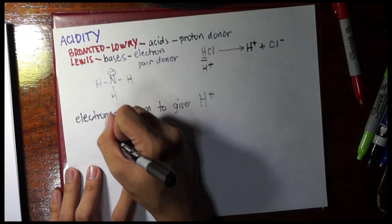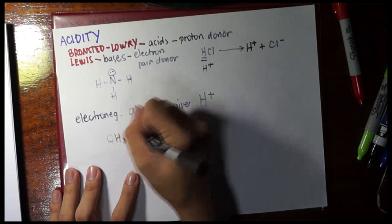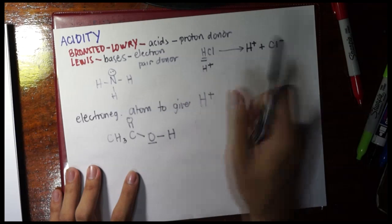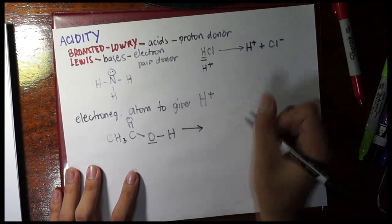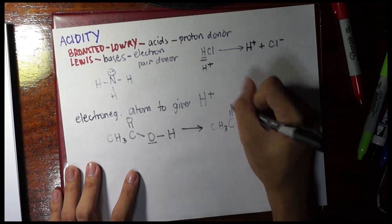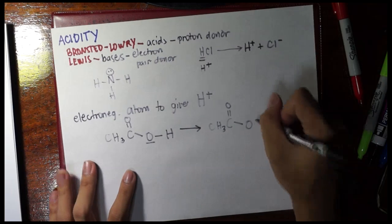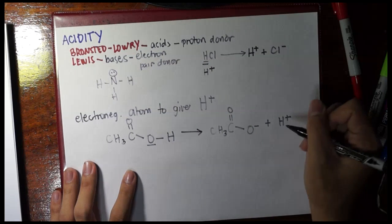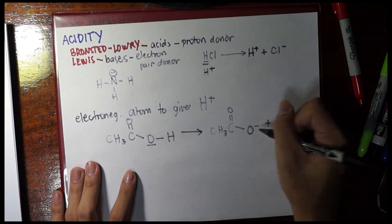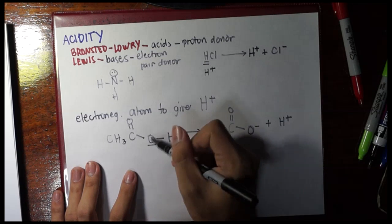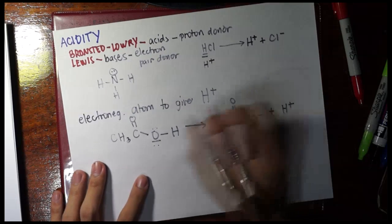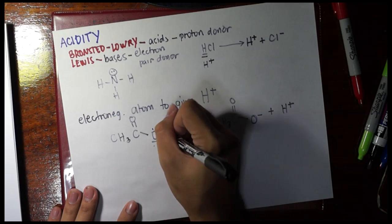We have here oxygen attached to a hydrogen. The reason why it's acetic acid is because if this oxygen releases the H, it would act as a proton donor. So what is the reason why oxygen gave out the hydrogen? Remember, oxygen here is electronegative, and you have to satisfy the electronegativity of the oxygen.